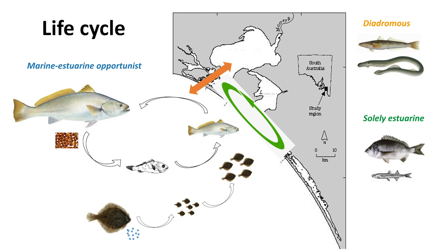You've also got a group of solely estuarine species that can complete their entire life cycle within the estuary. This includes large-bodied fish like black bream, but also tiny small prey species like smallmouth hardyhead. Then there are diadromous fish which move between marine and freshwater to complete their life cycle - the estuary is an important passage and habitat for them. Chris Bice will talk more about diadromous fish.